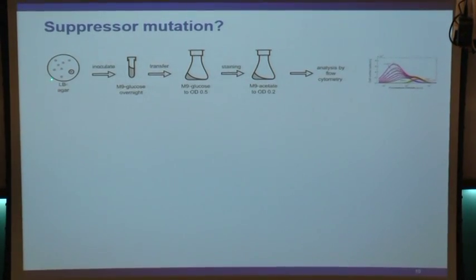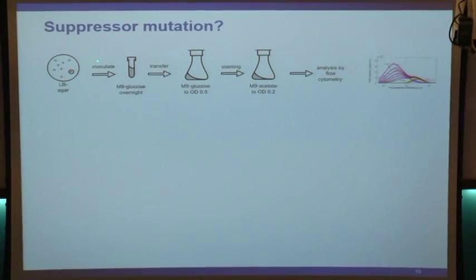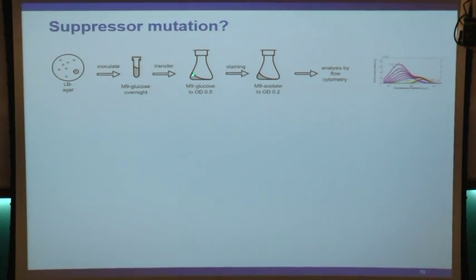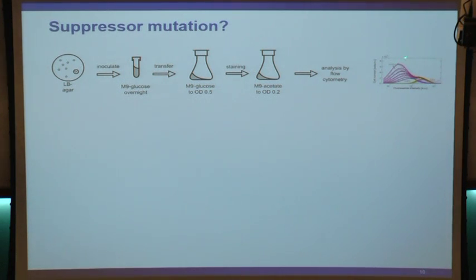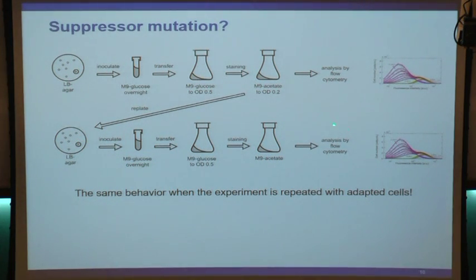Our whole experimental procedure: start from an agar plate with individual colonies, re-inoculate overnight into glucose culture, stain, switch to acetate culture, perform the experiment. We waited until the growing cells had outgrown the non-growing ones, took a sample from this culture, went back through a plate again - plated out individual colonies - and went through the whole procedure again. We saw exactly the same thing again.